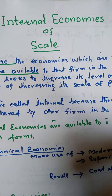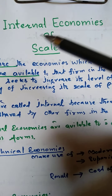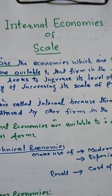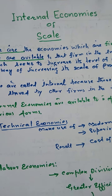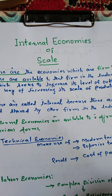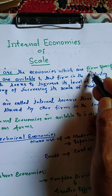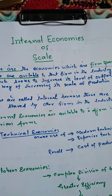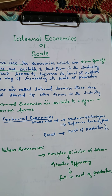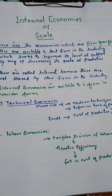Returns to scale hoti hain — we have internal economies of scale and we have external economies of scale. Pehle hum internal economies ko discuss karenge. Internal economies of scale yeh woh economies hoti hain which are firm specific. Yeh aise halaat hote hain jin ka faida sirf usi firm ko hota hai jo output increase karne ke liye apni scale ko change karti hai.